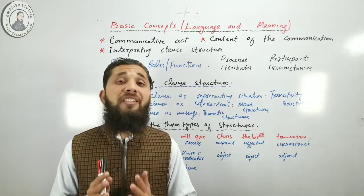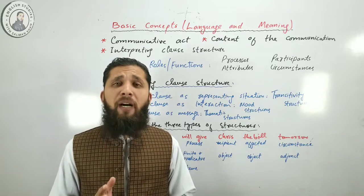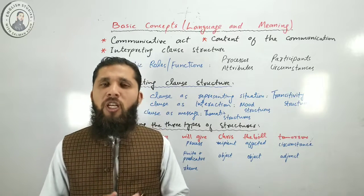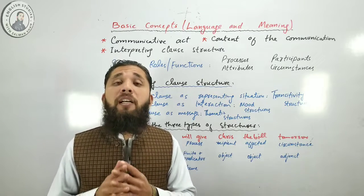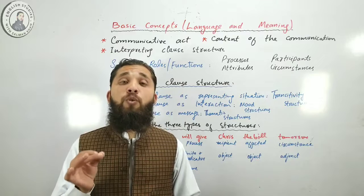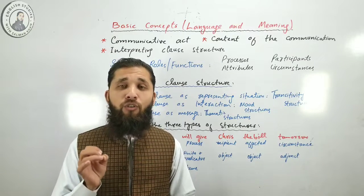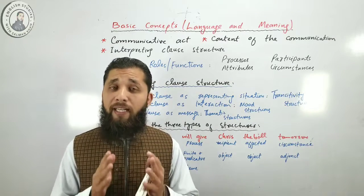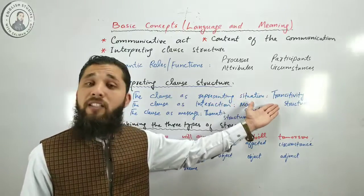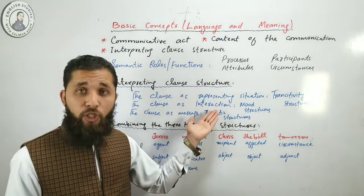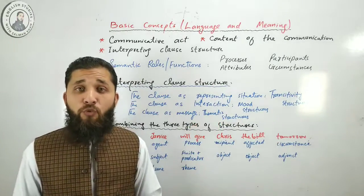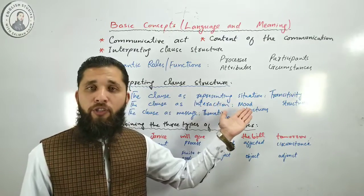Each type of meaning is encoded by its own structures, and the three structures combine to produce one single realization in words. To summarize: the three kinds of meaning derived from the consideration of clause are the linguistic representation of our experience of the world, the communicative exchange between persons, and an organized message or text. The three types of structures that implement these meanings are: the clause as representing situation, called transitivity structure; the clause as interaction, called mood structure; and the clause as message, called thematic structure.